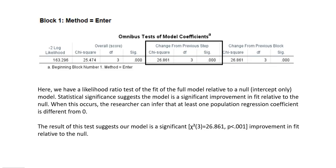Here we have a likelihood ratio test of the fit of the full model relative to a null or intercept-only model. Statistical significance indicates that the full model is a significant improvement in fit relative to the null model. When this occurs, a researcher can infer that at least one population regression coefficient is different from zero.